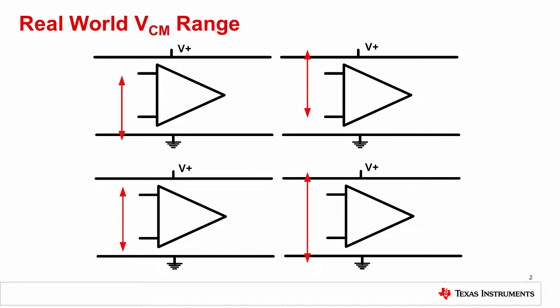The common mode range is the range of usable input common mode voltages for a given amplifier. When an amplifier is used outside of the allowable common mode range, it will not respond linearly and will not meet datasheet specifications.